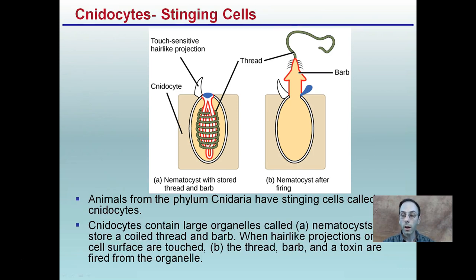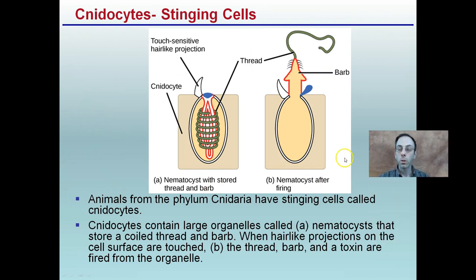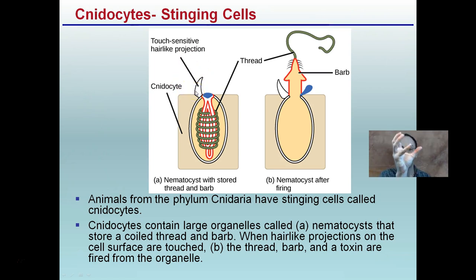Cnidocytes are stinging cells. Jellyfish are probably the ones you're most familiar with — you were likely told at an early age to stay away from them. Animals in this phylum have stinging cells that give them the ability to collect food. Depending on the type of jellyfish, the sting could be deadly even to humans. These cnidocytes contain large organelles called nematocysts, stored as a coiled thread and barb. When hair-like projections on the cell surface are touched, the thread, barb, and toxins are fired from the organelle — like a compressed spring releasing — and that's what causes the stinging.